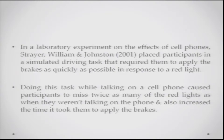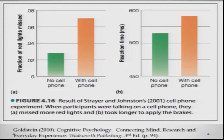In a laboratory experiment on the effects of cell phones, Strayer, Williams, and Johnston placed participants in a simulated driving task that required them to apply brakes as quickly as possible when a red light flashed. Doing this task while talking on a cell phone caused participants to miss twice as many red lights as when they were not on the phone. The results show that the number of red lights missed is much higher with cell phone use, and reaction time is also much slower while driving with cell phones.